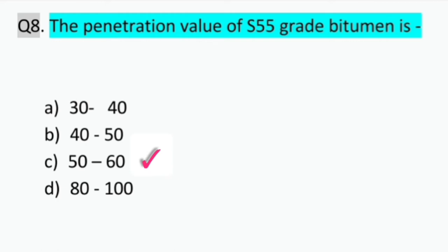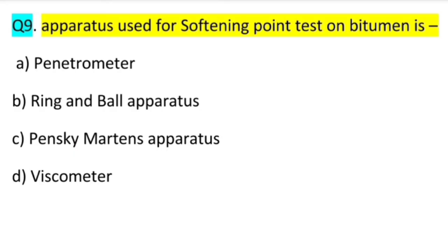Question number nine: the apparatus used for softening point test on bitumen. This softening point test is one of the tests of bitumen and this test is used to find out how much time it will take for the bitumen to become soft. For that we use the ring and ball apparatus.